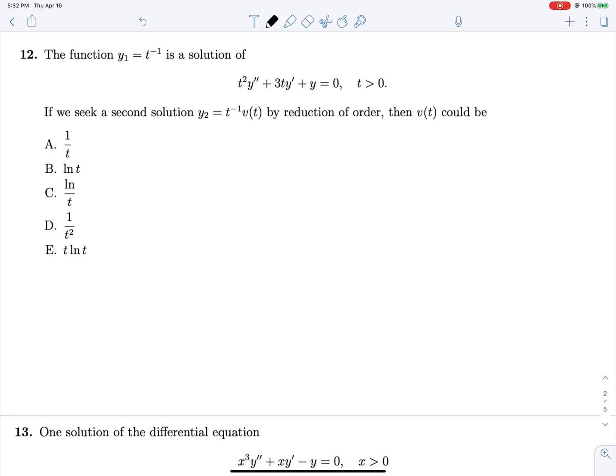We have y1 of t and we are looking for v of t, the thing that we multiply by y1 of t to get y2 of t. So we can say that v of t is equal to the integral of e to the negative integral of p of t, where p of t is going to be 3t over t squared, because we have to get rid of this term over here.